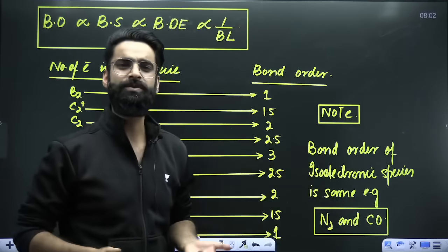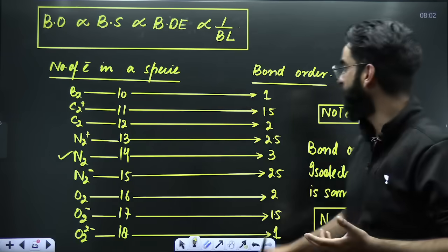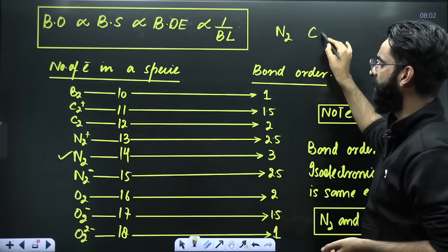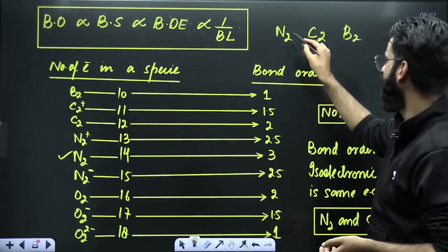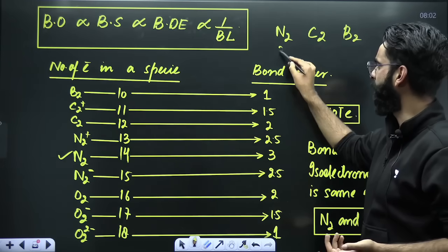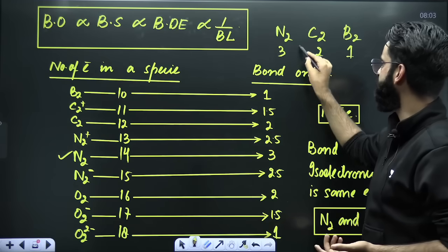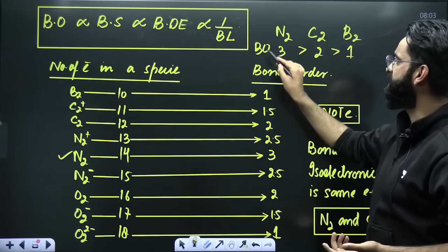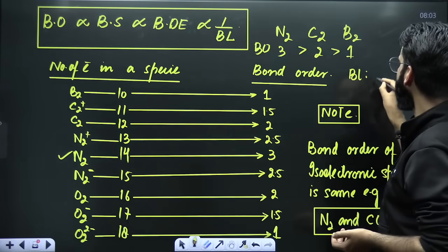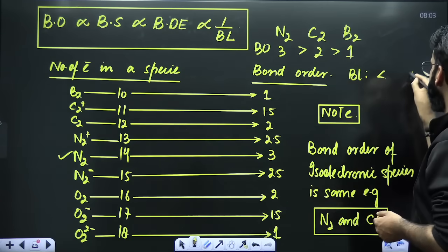And once you get the Bond Orders, you can easily talk in terms of Bond Strengths as well. For example, you have to compare the Bond Strengths — let's assume you are given with N2, C2, and B2 — and you have to compare their Bond Lengths. What you'll do is calculate their Bond Order. Bond Order of N2 is 3, Bond Order of C2 is 2, and Bond Order of B2 is 1. So this is the order of Bond Order. Now, whatever is the order for Bond Order, the reverse of that is going to be the order of Bond Length. If you talk about the Bond Length order, you just have to interchange those symbols — that's all.